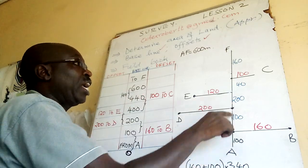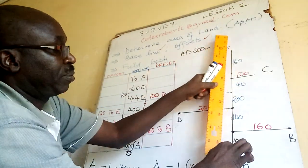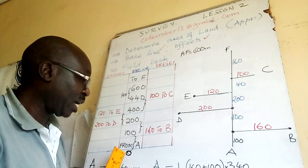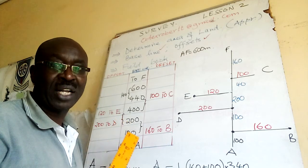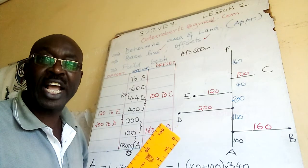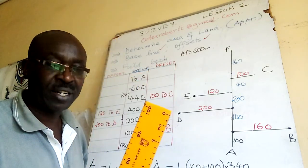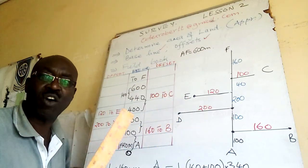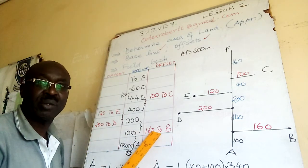When you are given a field book, beside it draw a baseline AF. Baseline measurements start from zero increasing upward. A is at level zero, F is at level 600. Then come and do one offset at a time.